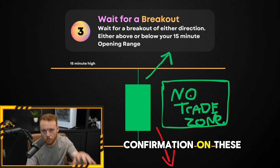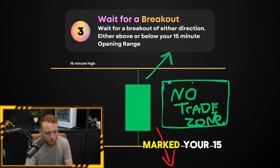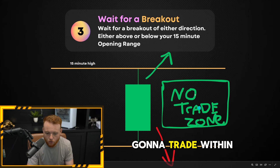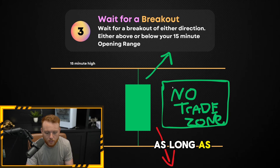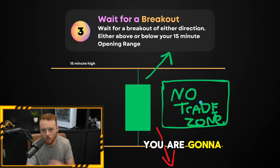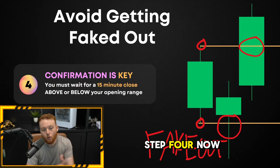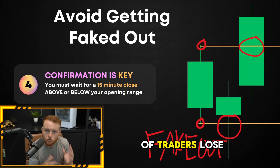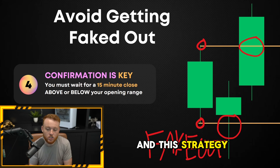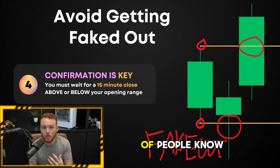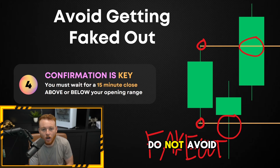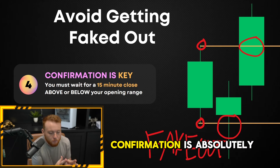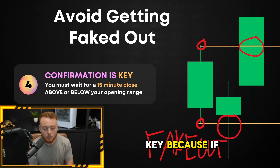You've marked your 15-minute high and your 15-minute low, and you're not going to trade within this zone at all. As long as price is trading within this zone, you are going to stay away. Step four is the most crucial step yet, because a lot of traders lose on this strategy. It's a very common strategy, so a lot of people know it, but a lot of people lose because they do not avoid getting faked out.